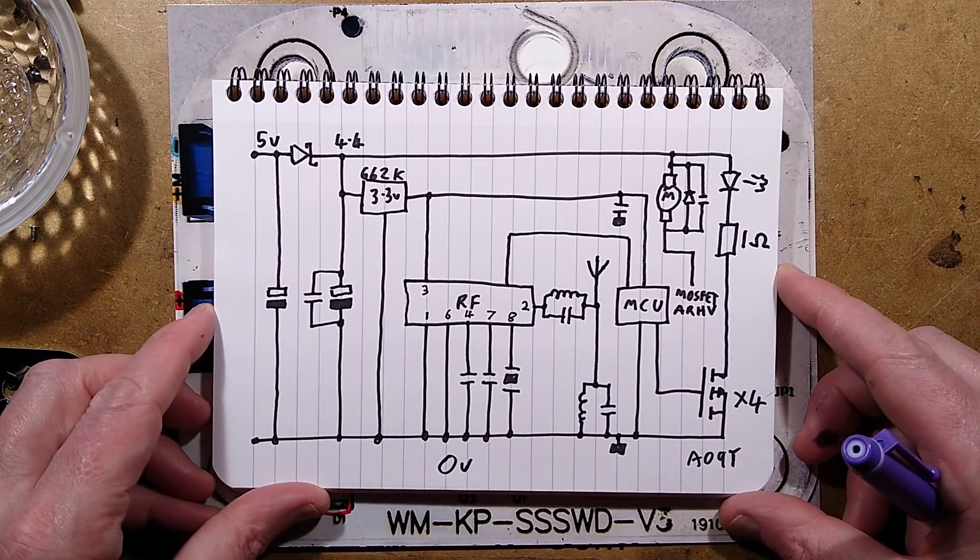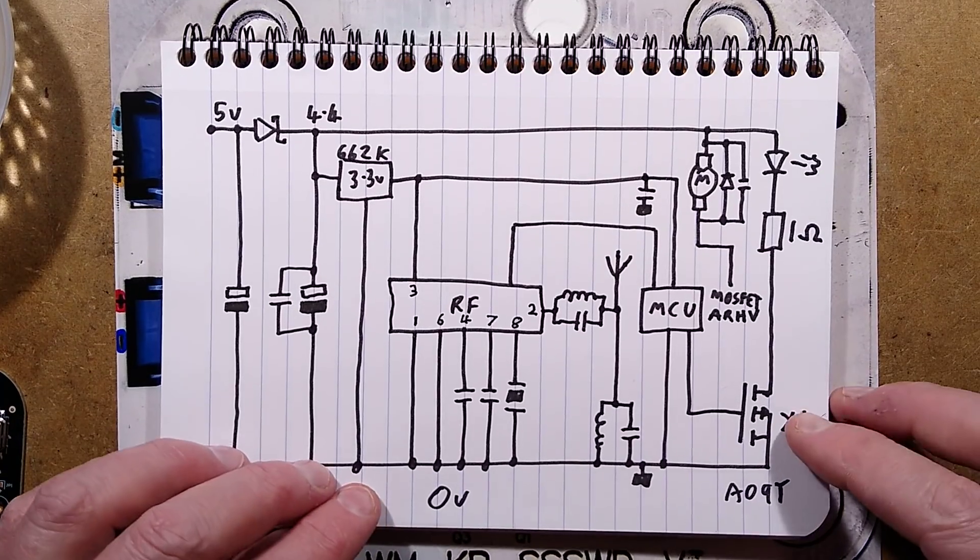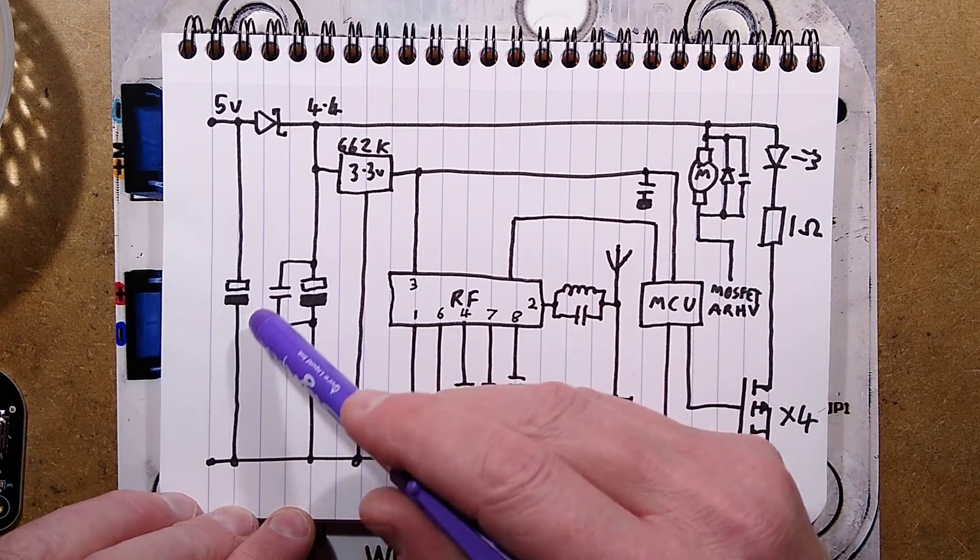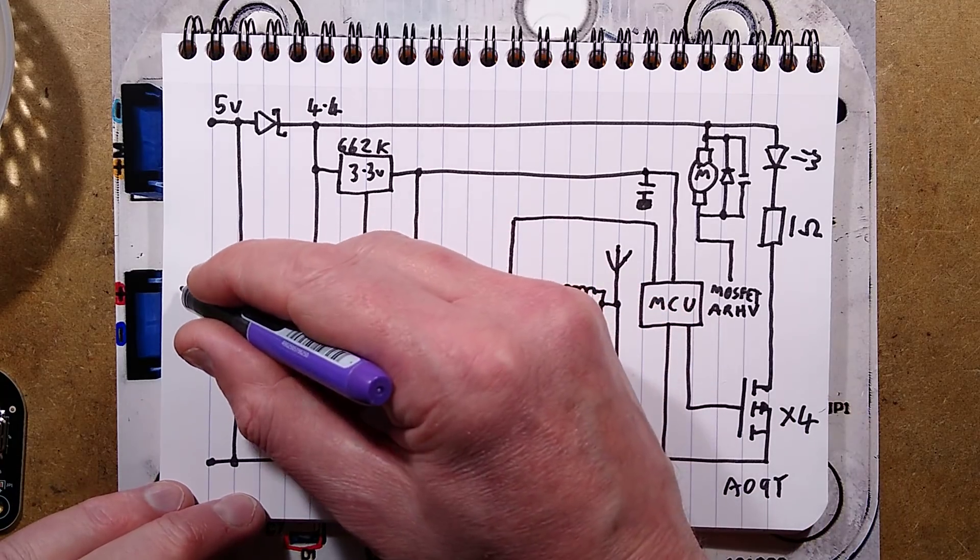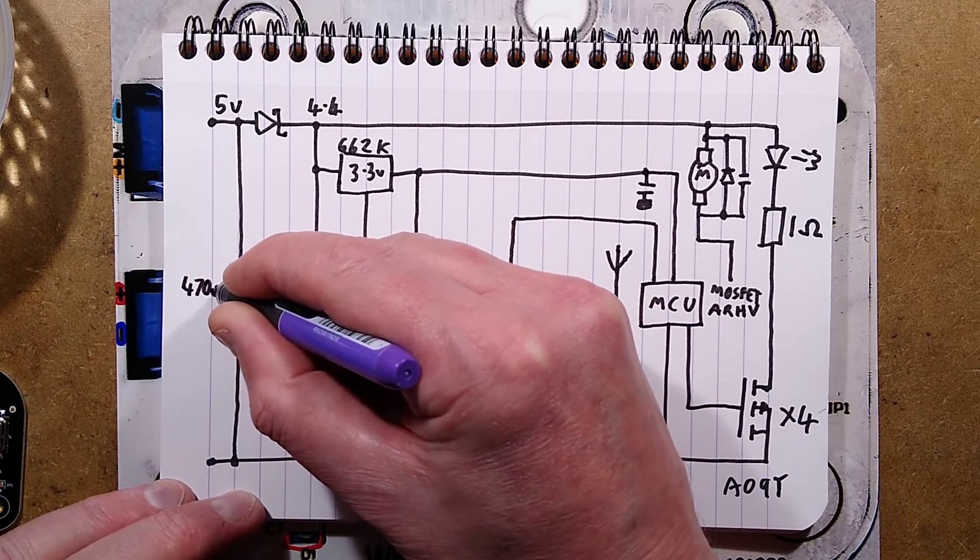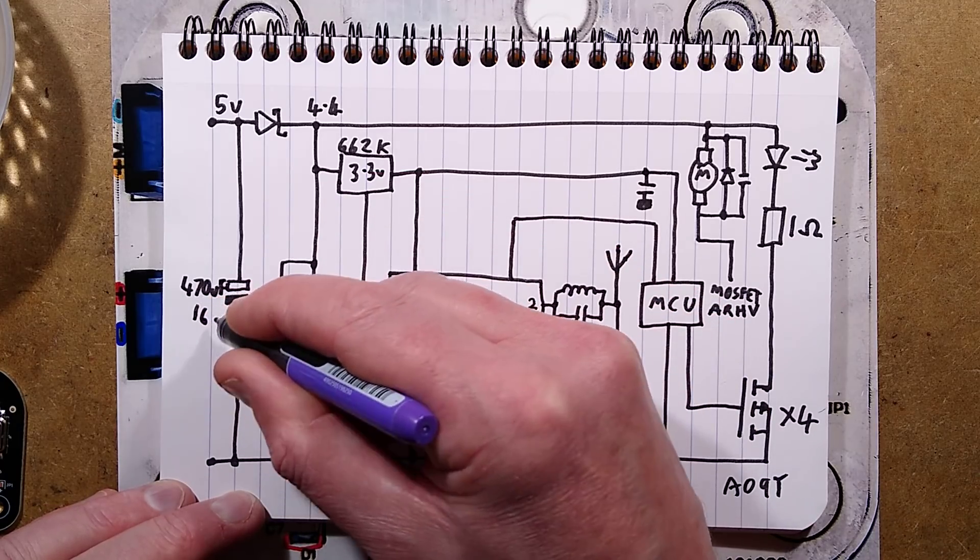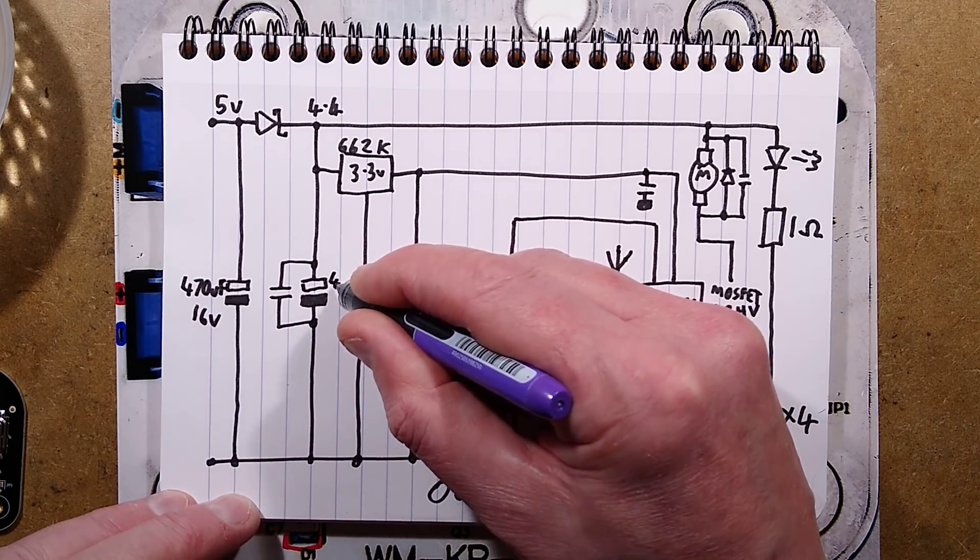Here is the schematic. I shall zoom down tight a little bit onto this. So here's the incoming supply, 5 volts-ish. There's the smoothing capacitor, 470 microfarad at 16 volts. So is this one, this is also 470 microfarad at 16 volts.